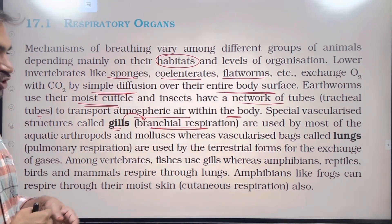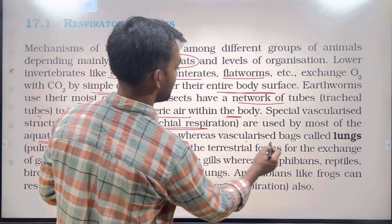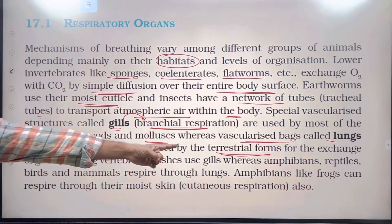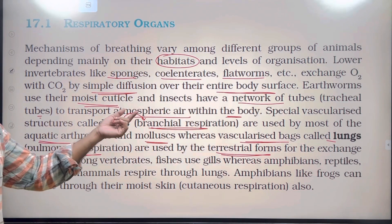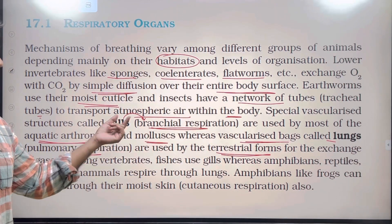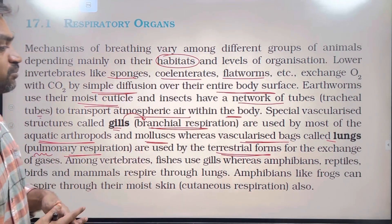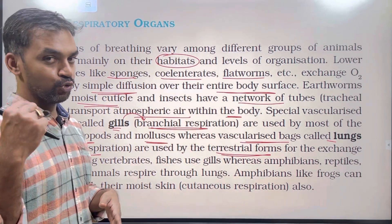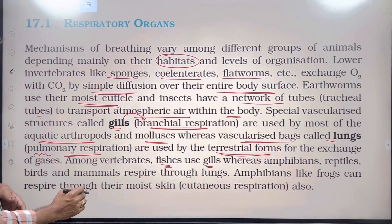Gills are used by most of the aquatic arthropods and mollusks, whereas vascularized bags called lungs — pulmonary respiration — are used by terrestrial forms. Among vertebrates, fishes use gills, whereas amphibians, reptiles, birds, and mammals respire through lungs.